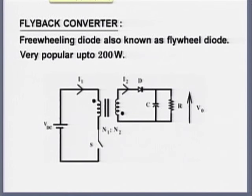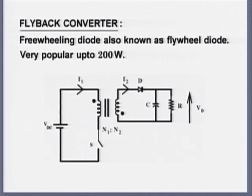We concluded that we cannot have a very low value of D for a buck converter, nor can we have a very high value of D for boost and buck-boost type of converters. Therefore, I cannot have a too low voltage in a buck converter, nor a very high voltage in a boost or buck-boost converter. The maximum ratio could be of the order of 7 to 10, not more than that.